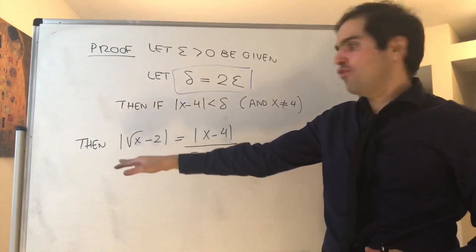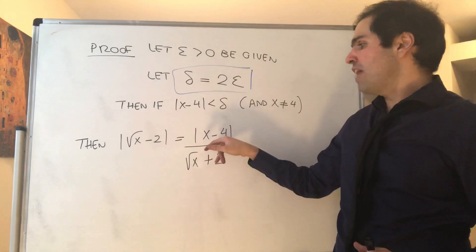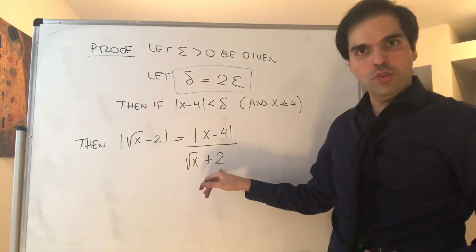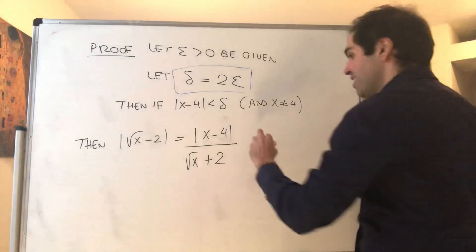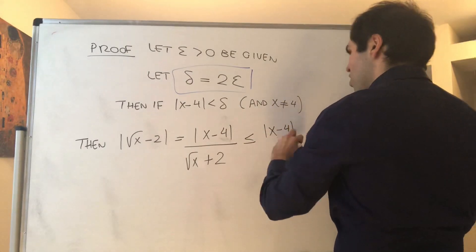Then, from what we had before, square root of x minus 2 became absolute value of x minus 4 over square root of x plus 2. So, that was after this multiplying by the conjugate. But now, remember, this is less than or equal to x minus 4 over 2.